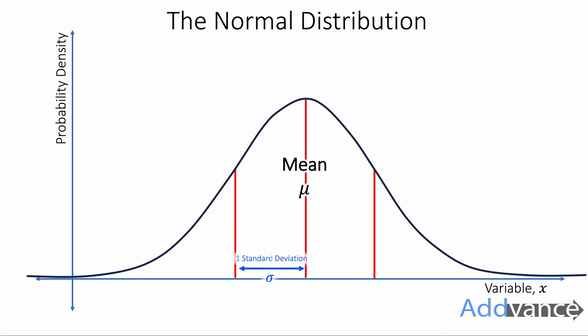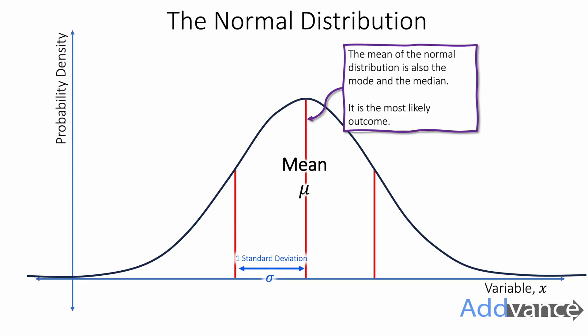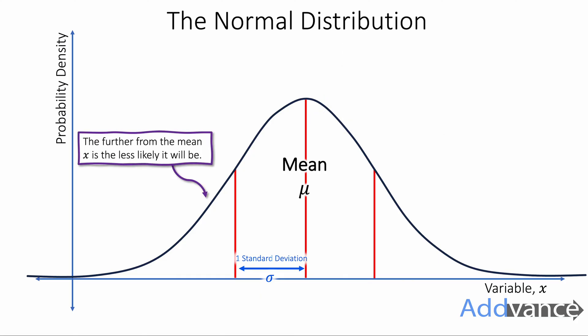The key idea with a normal distribution is that in the middle we have the mean and this is the most likely outcome. The mean is also the mode and the median in the normal distribution. It is the most likely outcome and the further from the mean you get, the less likely your variable will be.